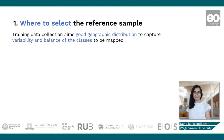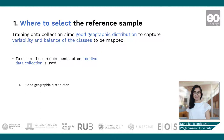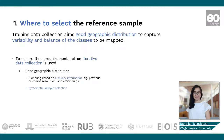When collecting training data, we usually aim to have a good geographic distribution to capture the variability and balance of the classes to be mapped. This can be achieved through two iterative data collection steps. First, we can focus on good geographic distribution, using auxiliary information such as previous maps or a systematic sample selection — where at every certain distance, a training sample location is selected. Focusing on geographic distribution alone may not be sufficient because some classes may be very rare, so the second iteration can be targeted to improve balance for rare classes.